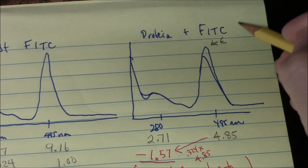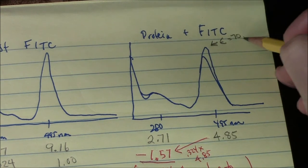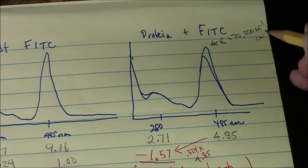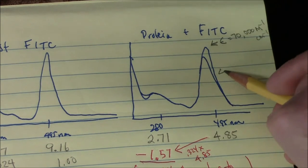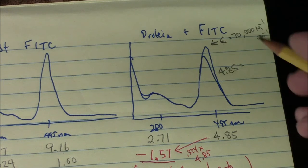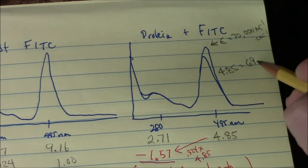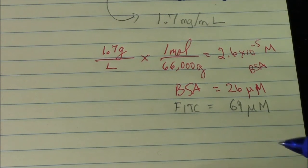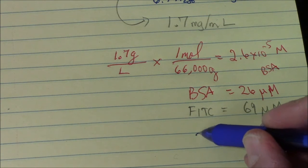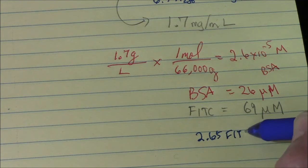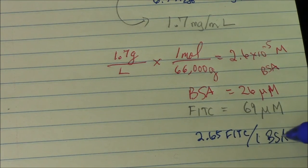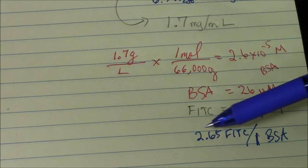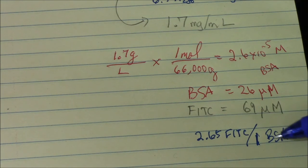The extinction coefficient of the FITC at 495 nanometers is 70,000 molar minus 1, centimeter minus 1, so an absorbance of 4.85, 69 micromolar. So with these two values, I get the ratio between them. That's what I really care about. And according to my math, it's 2.65 fluorescein molecules for every one BSA protein molecule. So this is the number of fluorescein molecules bound to each molecule of BSA. This is an average. There will be some protein molecules that have a higher number and some that have a lower, but this is the average for the population in that sample.